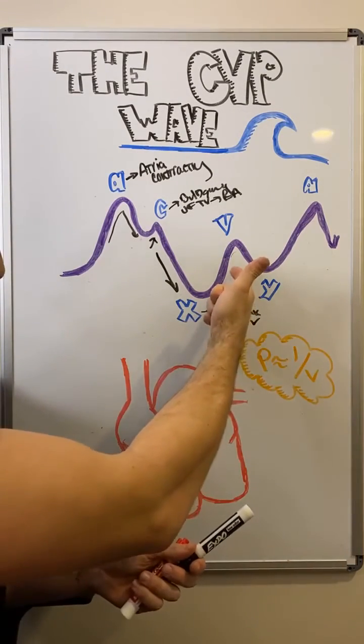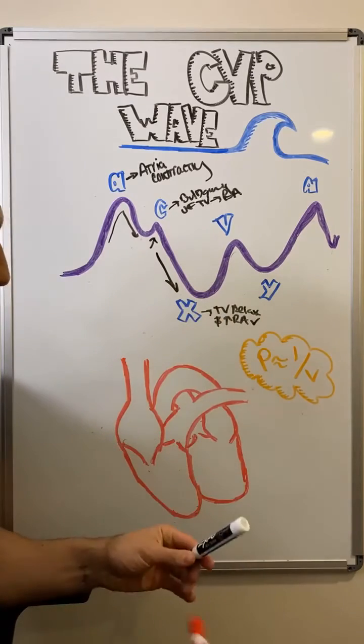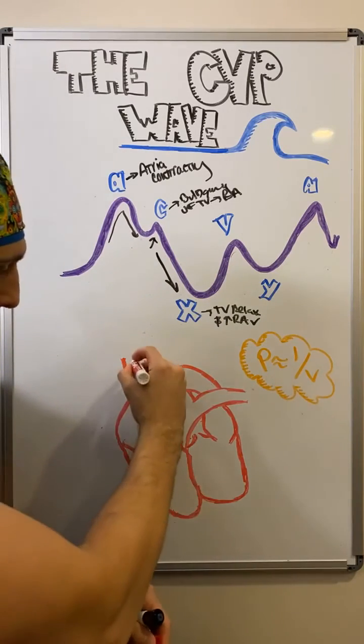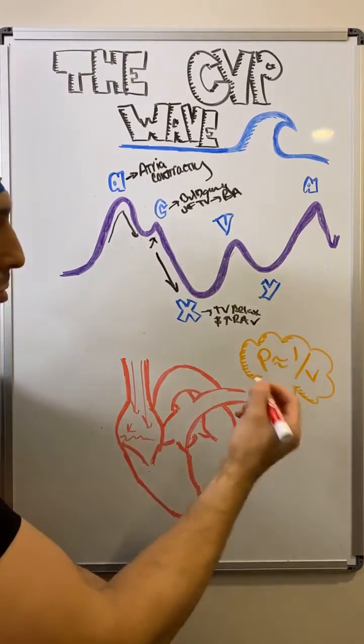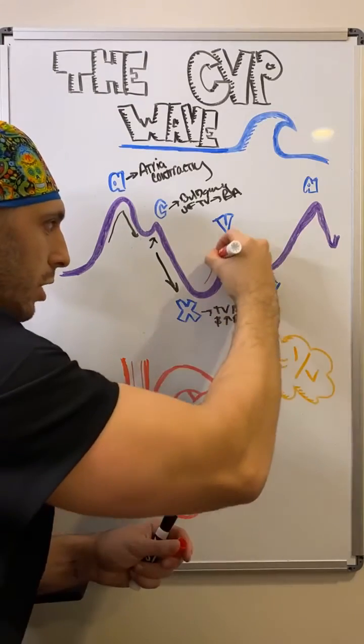So during V, our right atria, this is early diastole, is starting to fill with blood again. And as it fills with blood, the pressure begins to rise.